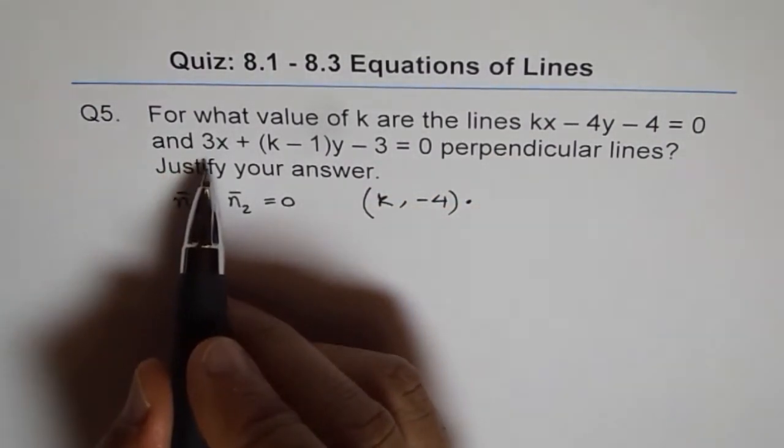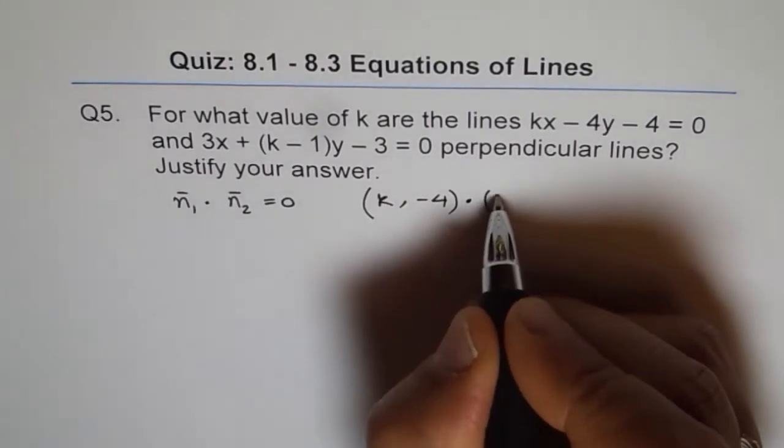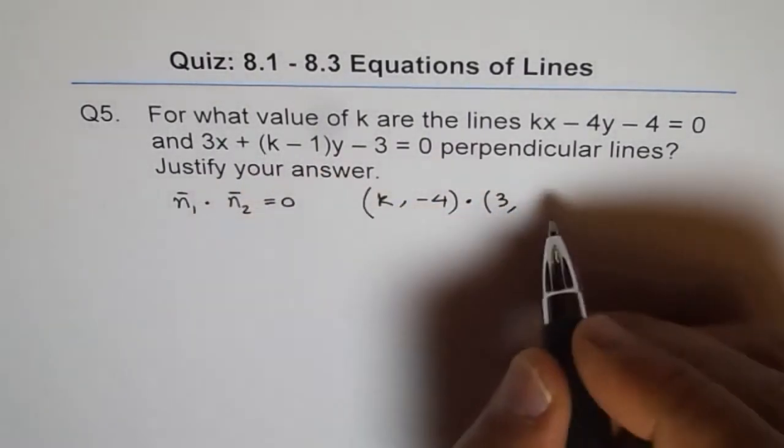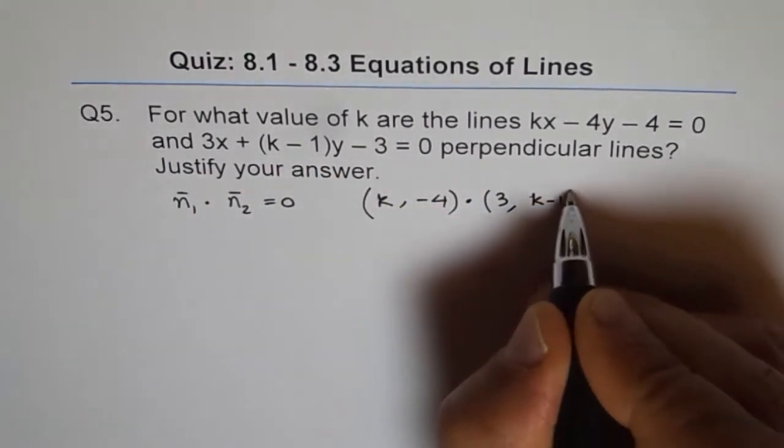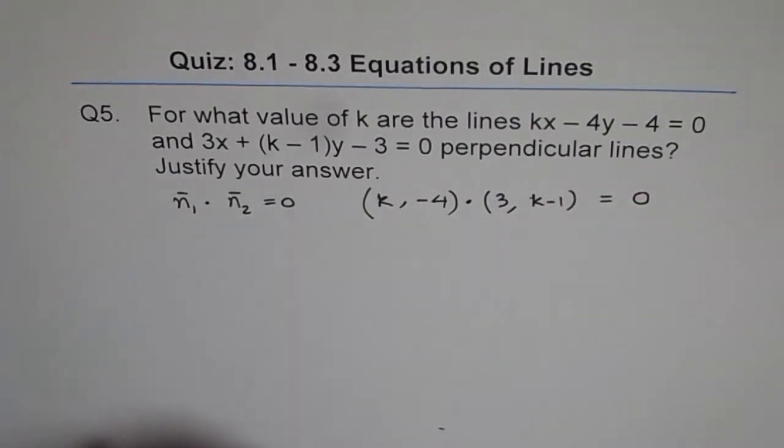Dot n2 is what? 3, k minus 1. And that should equal 0. This is what we want to find.